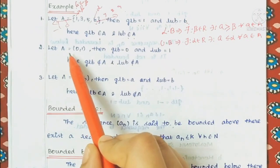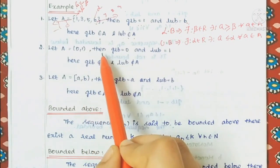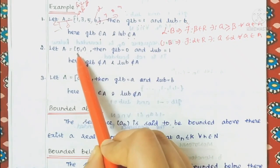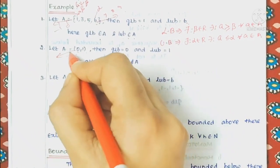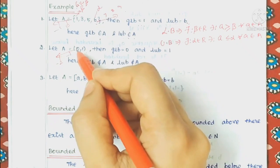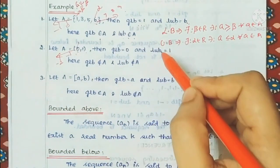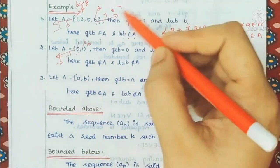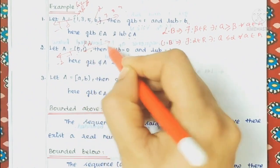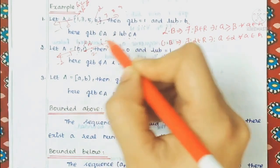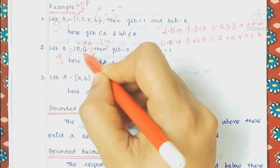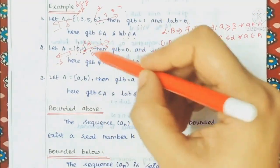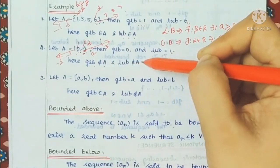Second example: A is equal to the open interval (0, 1). If we consider the lower bound, it is 0 — so the greatest lower bound is 0. For the least upper bound, consider alpha as an upper bound. If you try 2 or 3 they are upper bounds, but 1 is a little less. Since the interval is open, 0 and 1 do not belong to A. Therefore, the greatest lower bound does not belong to set A, and the least upper bound does not belong to set A.